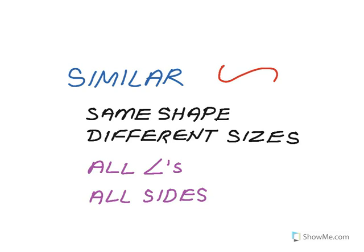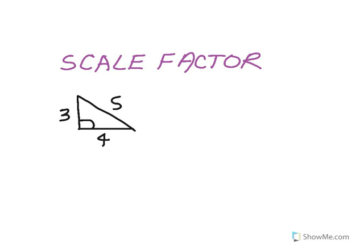The symbol we use for similar looks like this. It's a squiggle, like so. And what makes two polygons the same shape is the fact that all of the angles between the two polygons are exactly congruent to each other. And all the sides are not the same, they're not congruent, but they are all proportional. We'll explore in a minute what that means and what that looks like.